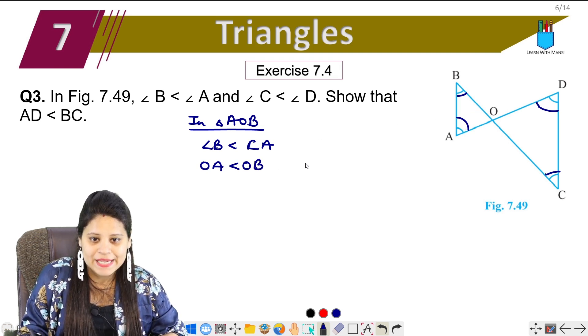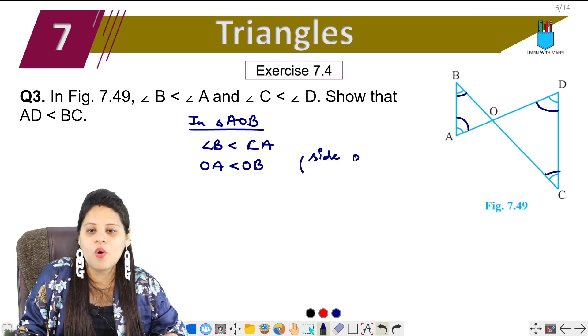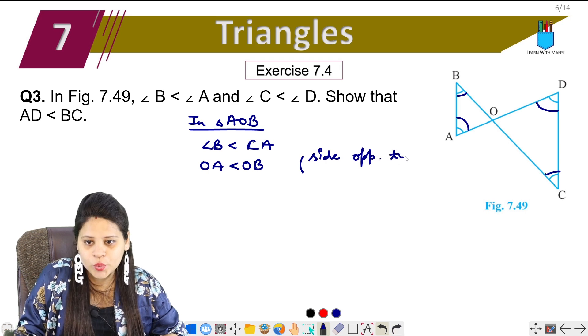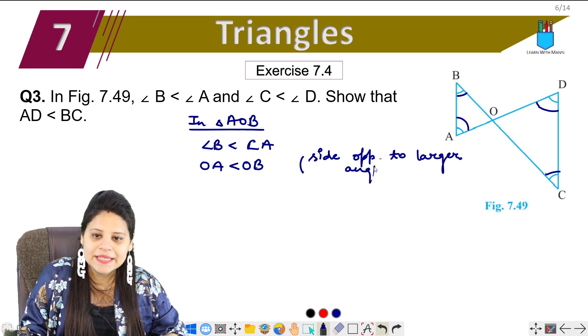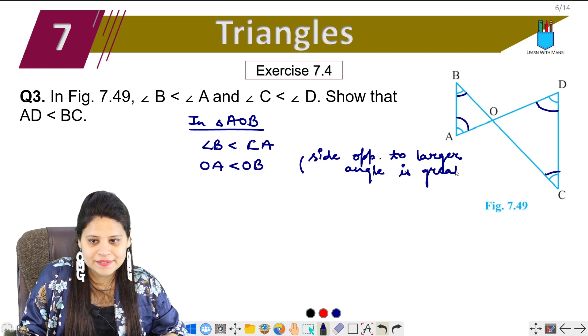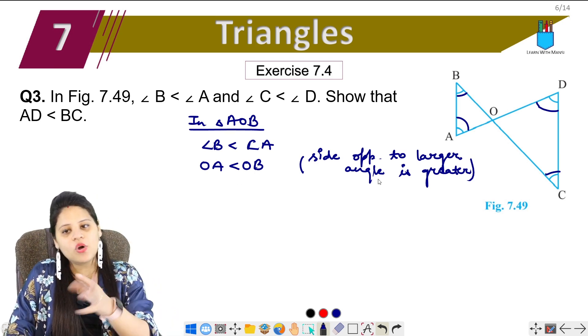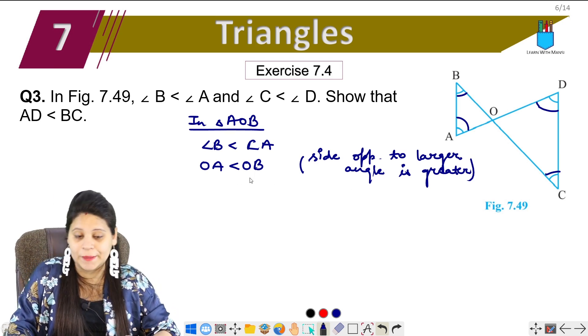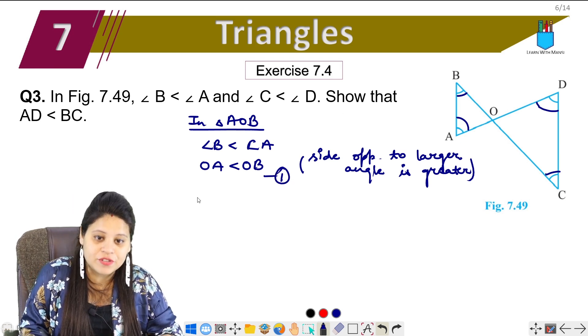And here we have to write the reason: Side opposite to larger angle is greater. Okay? So here we have to write. This will be the same in this triangle. This will be the same first.